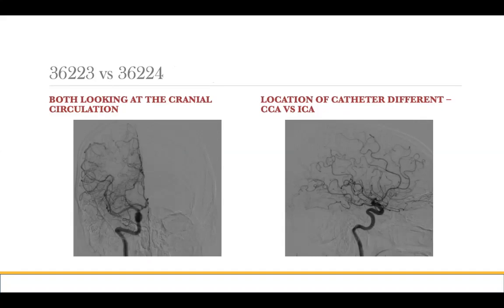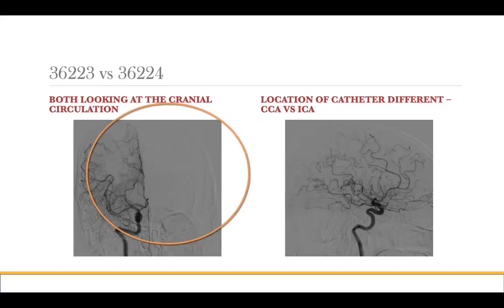There are two codes that allow for interpretation and imaging of the intracranial internal carotid artery: 36223 and 36224. The difference is the placement of the catheter. If the catheter is actually placed into the internal carotid artery, then we use 36224. If the catheter stays in the common carotid artery, then 36223 is the appropriate code.